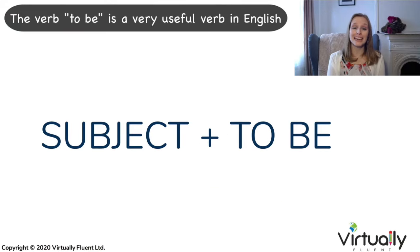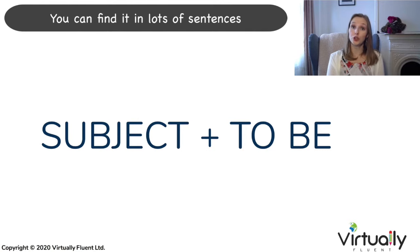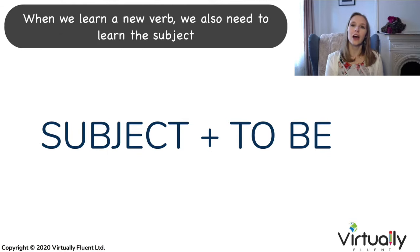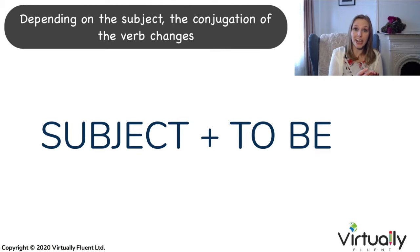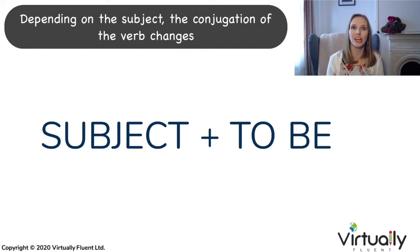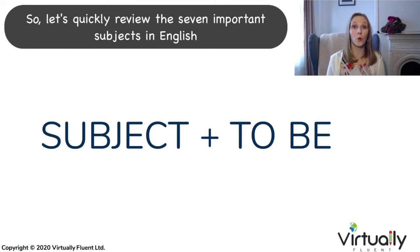The verb to be is a very useful verb in English. You can find it in lots of sentences. When we learn a new verb, we also need to learn the subject. The subject is the person who completes the action. Depending on the subject, the conjugation of the verb changes. Let's quickly review the seven important subjects in English.